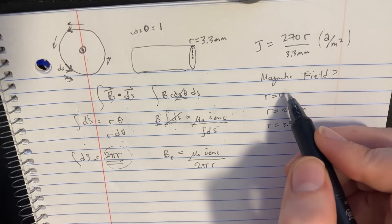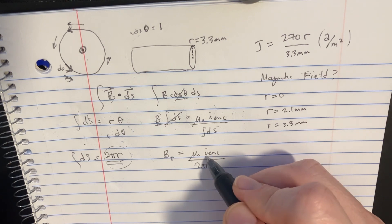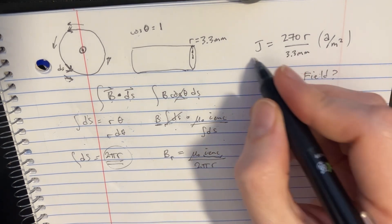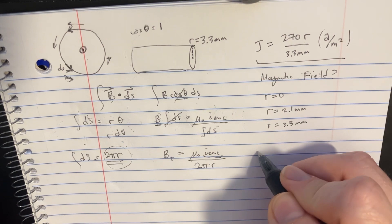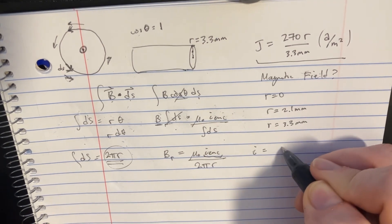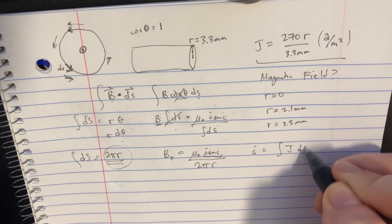And well, let's try to figure out the i enclosed now. We have another integral we got to deal with. There's going to be i equals the integral of j dA.